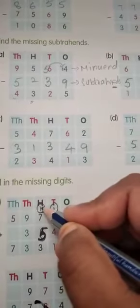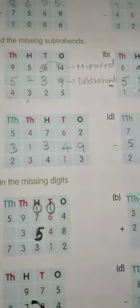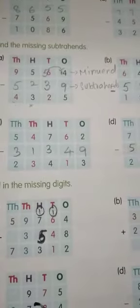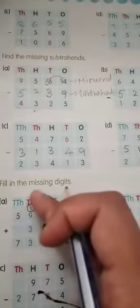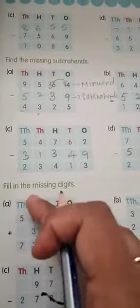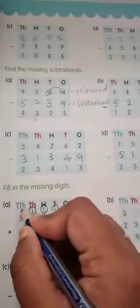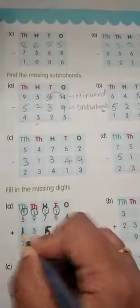7 plus 1 is 8. 8 plus 5: 9, 10, 11, 12, 13. So write 3 and carry 1. 9 plus 1 is 10. 10 plus 3 is 13, again 1 carry. 5 plus 1 is 6, and 6 plus 1 is 7. So we got 73,312.